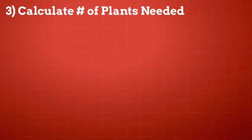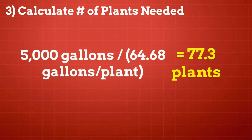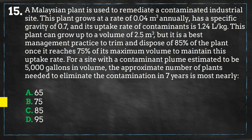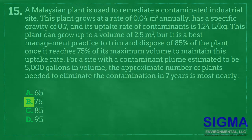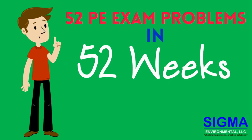Now that we have the uptake rate for one plant over seven years, we can divide this into the total volume of contamination on site and we get an answer of 77 plants needed. This answer is closest to B. Some people will try to incorporate the percentages of trimming and disposal into these calculations, but these facts are not needed as we are only focusing on contaminant removal. Join us for episode 16 of 52 PE exam problems in 52 weeks.